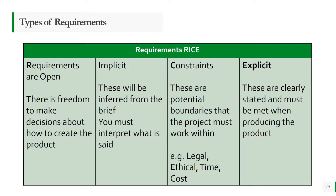Then you've got constraints — these are boundaries that will have a big impact on the product itself. These could be legal or ethical constraints, time constraints if you don't have long enough to complete it, or cost if you don't have enough budget. Finally, you've got explicit requirements — the most important ones. If you don't meet these, the client is not going to be happy. These are clearly stated and usually use words like 'must': this must do this, this must do that.